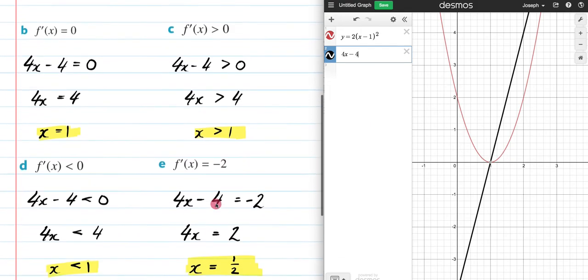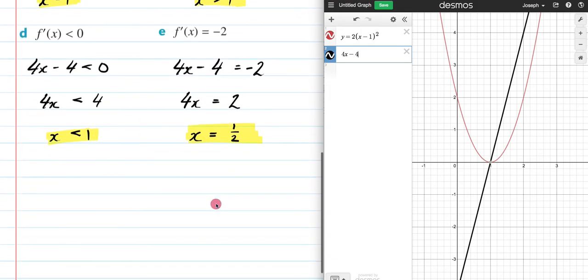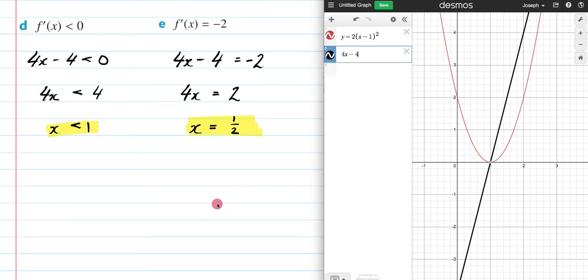Now, what do we know about the derivative? We know that the derivative is the gradient of the tangent. So let's look at e for a second. Let's just spend some time considering e. If my gradient is negative 2, if I were to write down the rule for the tangent, it's going to be y = -2x, so that's my gradient right there, plus some number.